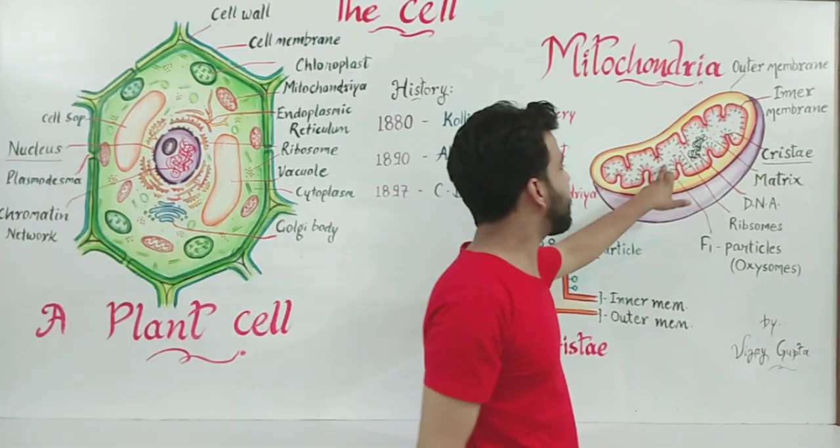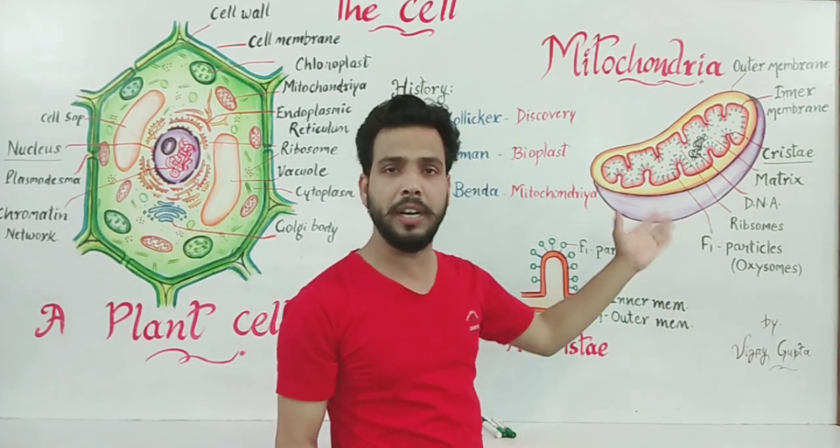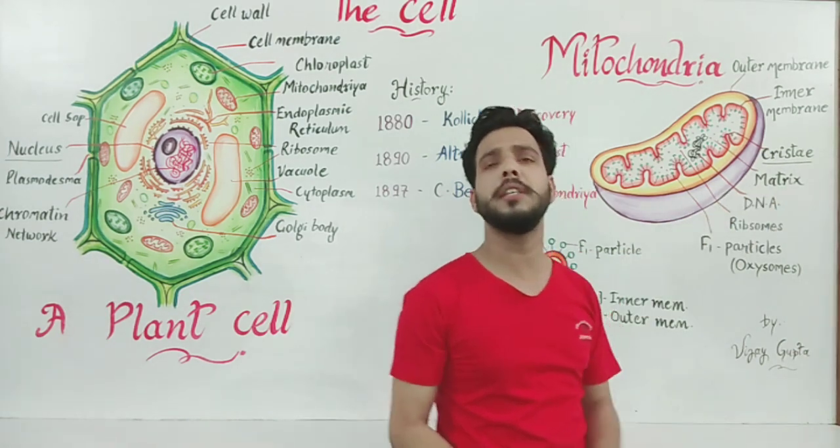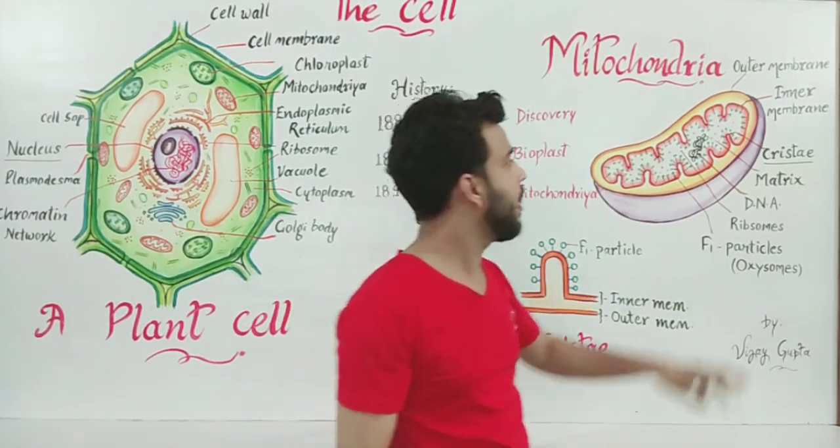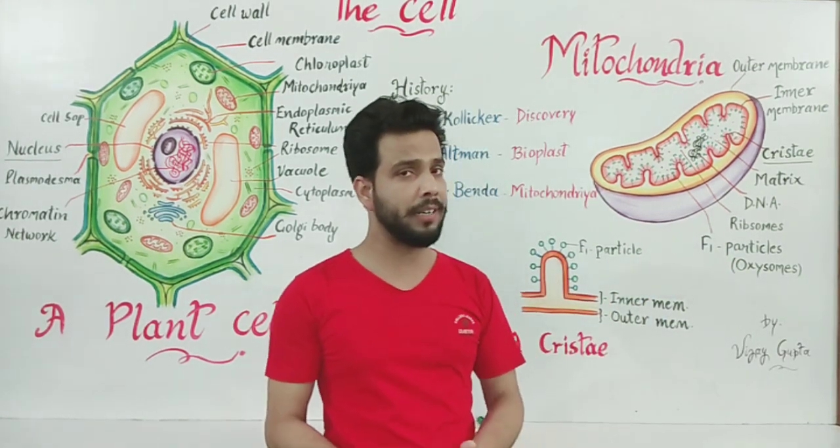Inside the mitochondria, a dark jelly-like liquid is filled that is often called matrix or also known as mitochondrial matrix. Some amount of DNA and ribosomes are also present in the mitochondrial matrix.